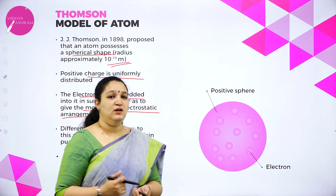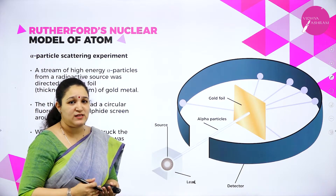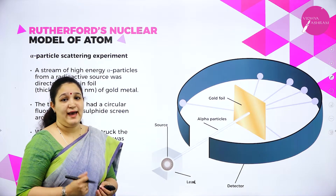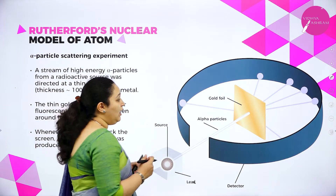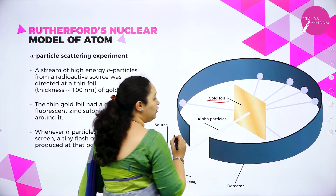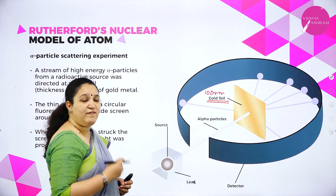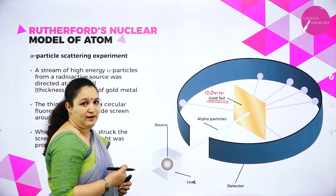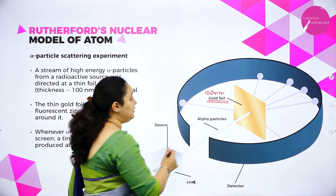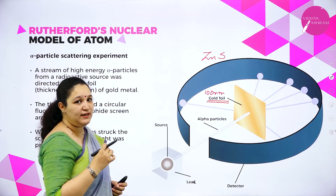The next model is Rutherford's nuclear model of an atom. He did the alpha scattering experiment along with his students Hans and Ernst. In this experiment, there is a thin sheet of gold foil with an approximate thickness of 100 nanometers — a very, very thin gold foil. Around this, there is a screen coated with zinc sulfide, which is a fluorescent material.